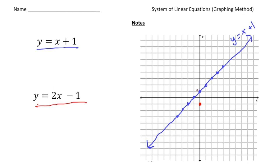We're going to go up 2 then over 1, up 2 over 1, up 2 over 1. We also go down 2 and left 1, down 2 and left 1. With the ruler, carefully draw a line through these points.